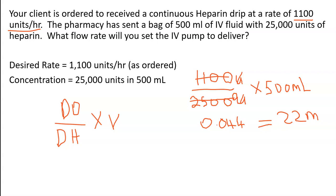So as the nurse, you will set the flow rate on the pump to 22 ml, and that will deliver the 1,100 units that is ordered.